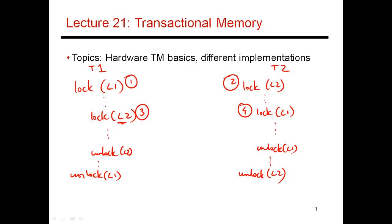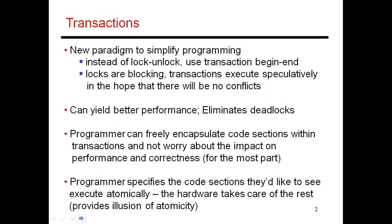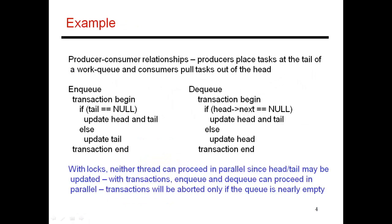So this is one of the bad things that can happen if you're using locks and the programmer is trying to acquire multiple locks at the same time. Let's look at another example — a task queue where some threads are producing tasks and enqueuing them onto the queue using an enqueue function, and other threads are taking tasks from the queue and completing them using a dequeue function.